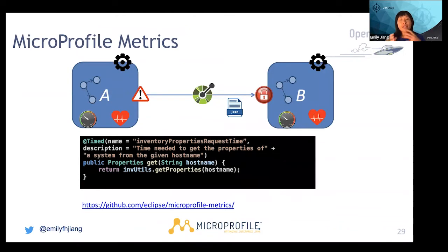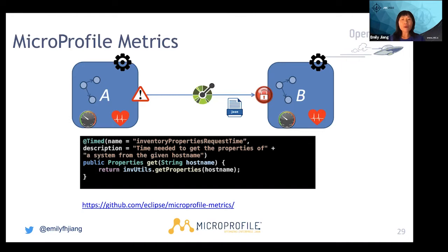Metrics are very key — they tell you about digital operations and how well the cloud native application is doing, and are able to send some warning signs. To do that, MicroProfile Metrics provides a number of APIs and annotations. For example, you can use @Timed to monitor how fast this operation can return a request. There are many other annotations available as well.